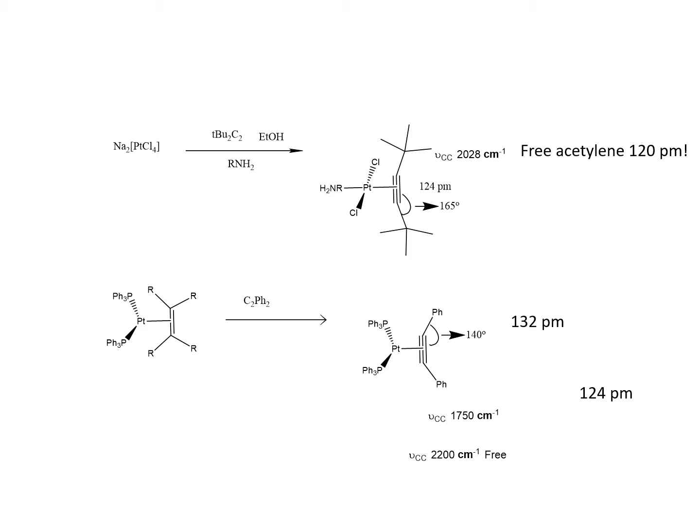In the acetylene complex, the C–C–R bond angle drops from the expected 180 degrees (for sp-hybridized carbon) to 165 degrees. This indicates the carbon is moving from sp to sp2 hybridization. Together, the change in hybridization, the bond length increase, and the stretching frequency decrease all confirm that the Dewar-Chatt-Duncanson model is operating in this platinum acetylene complex.